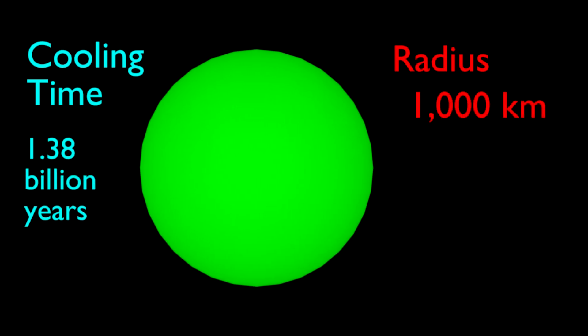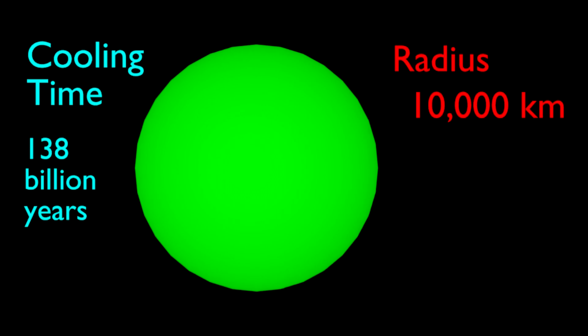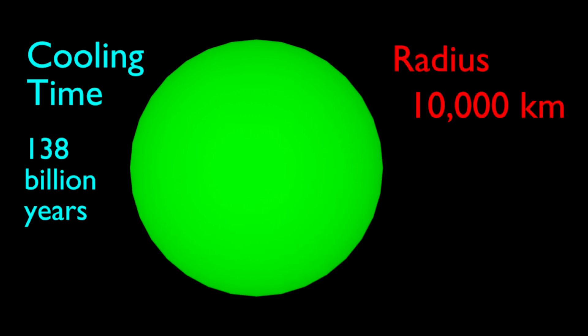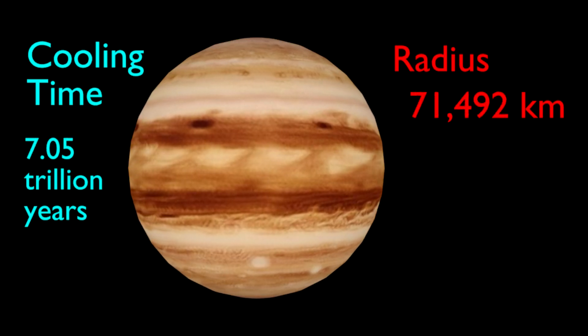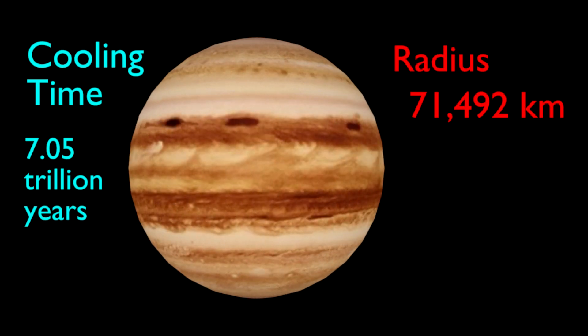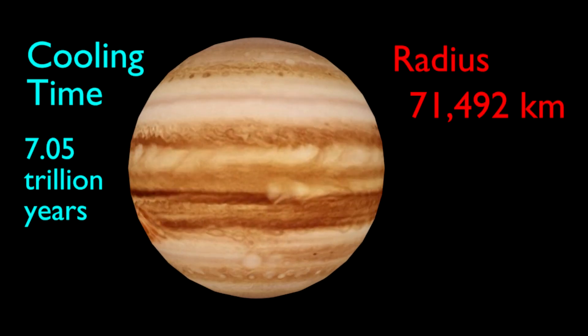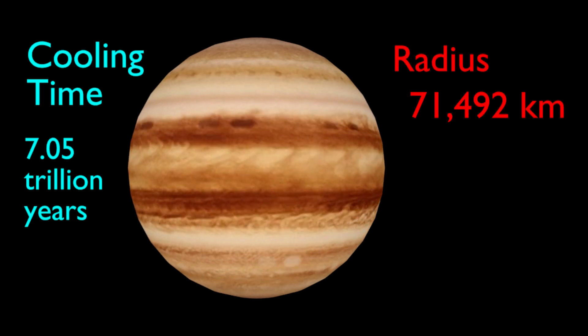We can continue calculating the cooling time for balls of bigger and bigger radii until eventually we get to a ball the size of Jupiter, with a radius of 71,492 kilometers. The cooling time for this ball of iron is an astounding 7 trillion years.